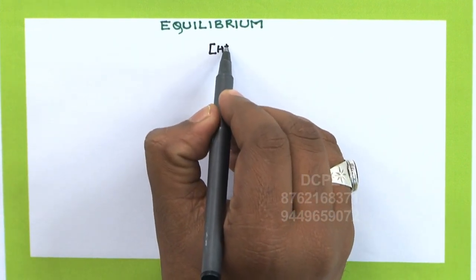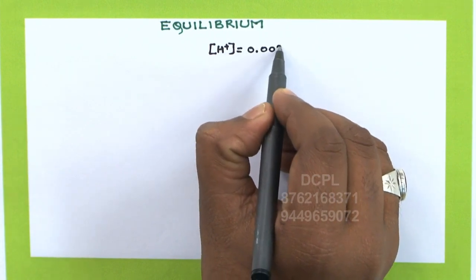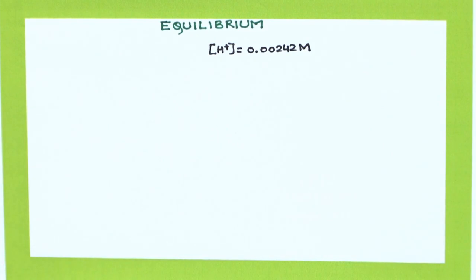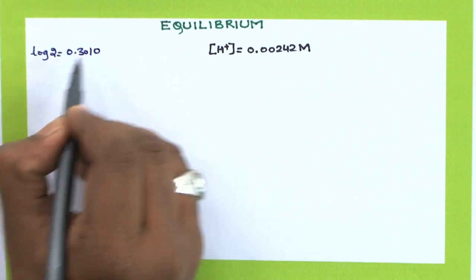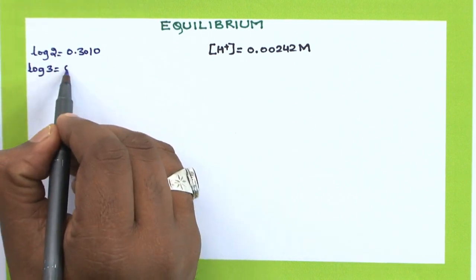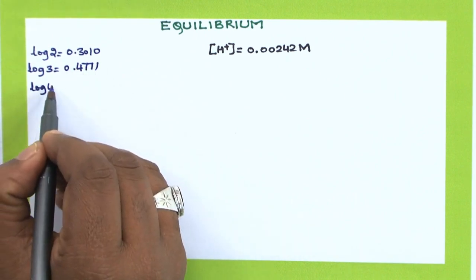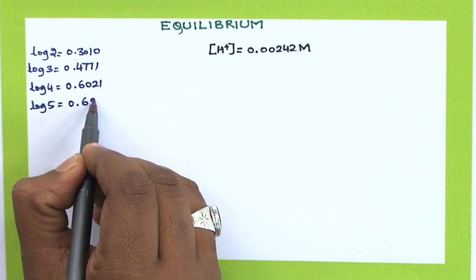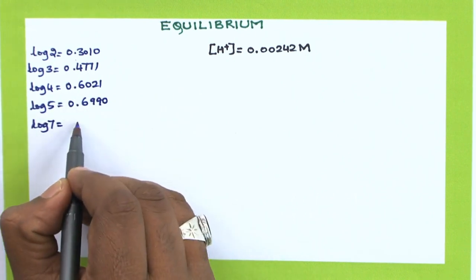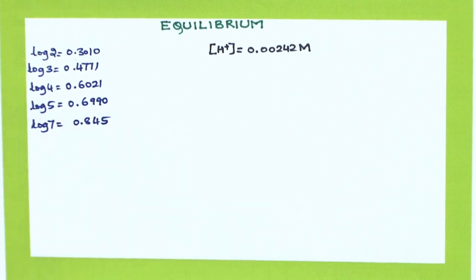Let us take a simple example and see how to calculate pH values. Let the H+ ion concentration given be 0.0024 molar. To calculate the values, you should know these five values: log 2 = 0.3010, log 3 = 0.4771, log 4 = 0.6021, log 5 = 0.690, and log 7 = 0.845. If you have an idea regarding these values, you can easily calculate the approximate pH of a solution.